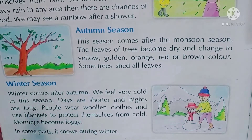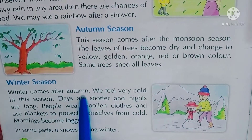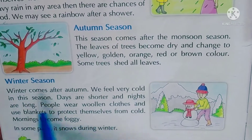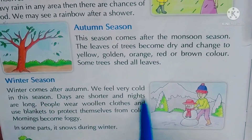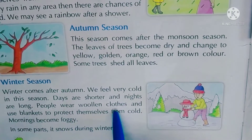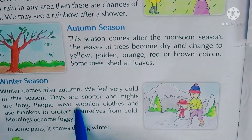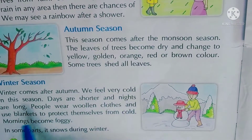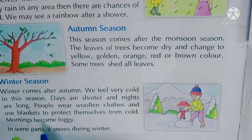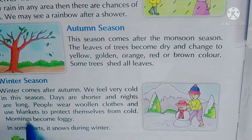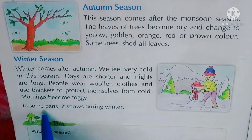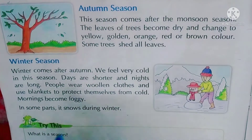Winter season - सर्द रितू। Winter comes after autumn - autumn के बाद सर्दी की रितू आती है। We feel very cold in this season - इस समय हमें बहुत ठंडा लगता है। Days are shorter and nights are long - दिन छोटे होते हैं और रातें लंबी होती हैं। People wear woolen clothes and use blankets to protect from cold - लोग ऊनी कपड़े पहनते हैं और कंबलों का उपयोग करते हैं।